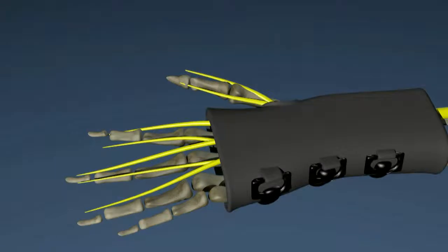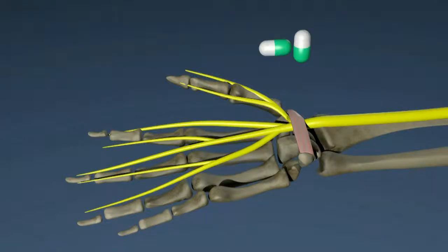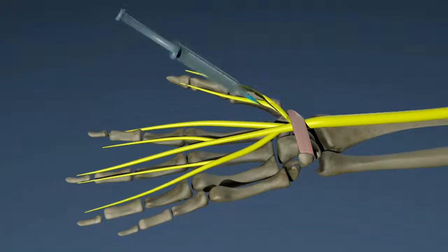In earlier stages, carpal tunnel syndrome can be treated non-surgically. Splints, anti-inflammatory medications, and injections can take pressure off the median nerve and relieve symptoms.